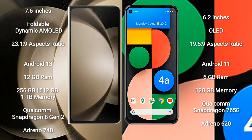The Samsung Galaxy Z Fold 5 comes with 12GB RAM and 256GB, 512GB, or 1TB internal storage, with a Qualcomm Snapdragon 8 Gen 2 processor and Adreno 740 GPU. The Google Pixel 4a comes with 6GB RAM and 128GB internal storage, with a Qualcomm Snapdragon 765G processor and Adreno 620 GPU.